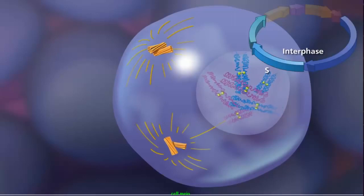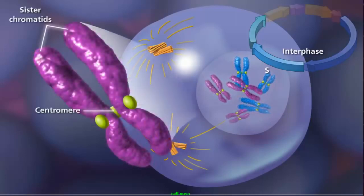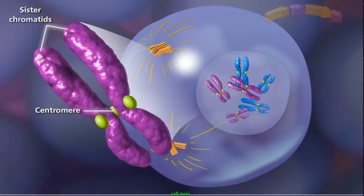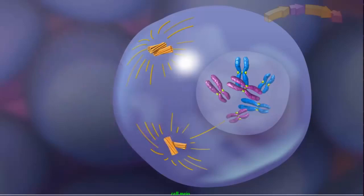Sister chromatids remain attached at the centromere and condense as the cell enters prophase I of meiosis. Up to this point, the cell looks similar to mitosis, but two events occur in meiosis that do not occur in mitosis and lead to genetic diversity.